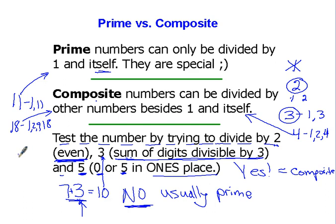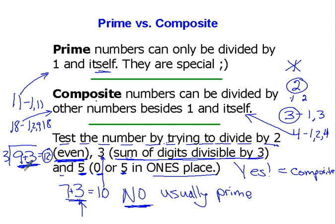Let's try ninety-three. Is it an even number, divisible by two? No — it fails the first test. Now let's try the three test: add the digits together — nine plus three equals twelve. Can twelve be divided by three? Yes — four times three is twelve. That means ninety-three can be evenly divided by three, so since it can be divided by a number other than one and ninety-three, it's composite.